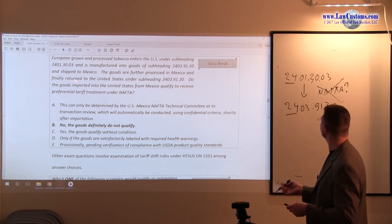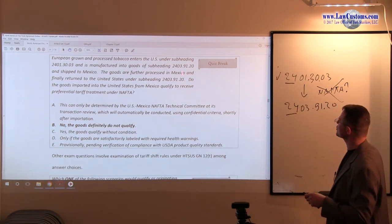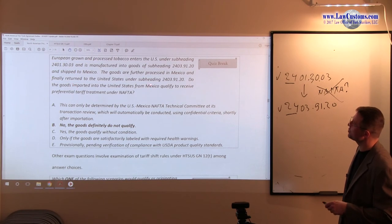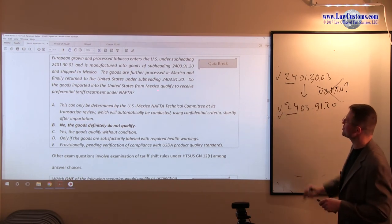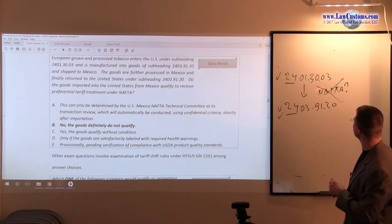What's being done in Mexico? It comes in under 24.03.30.03. It enters the United States. In the United States, it changes into the 91-20. Pretty much the same pattern. The goods are further processed in Mexico and finally return under the subheading 99-20. In Mexico nothing changed. So the question is, do other goods imported into the United States from Mexico qualify to receive NAFTA?